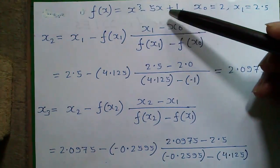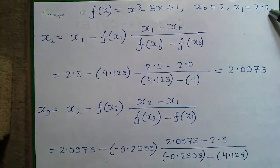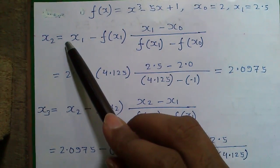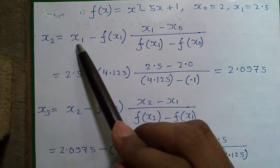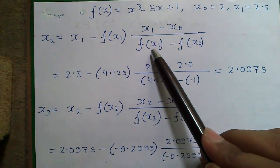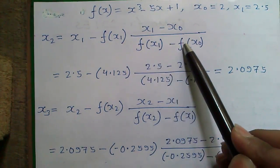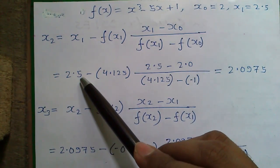So f(x) = x³ - 5x + 1, x₀ = 2 and x₁ = 2.5. So by general formula of secant method we can say x₂ will be x₁ - f(x₁) × (x₁ - x₀) / (f(x₁) - f(x₀)). So very simple formula. So let's apply it.